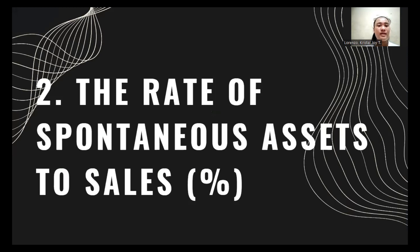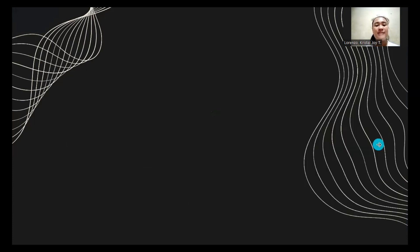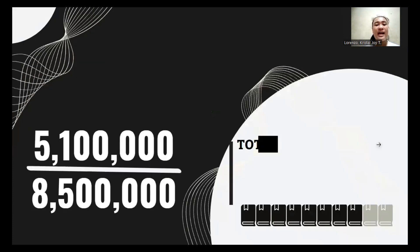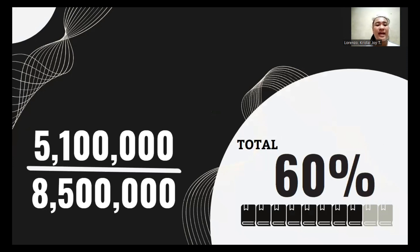Number two, the rate of spontaneous asset to sales. To get the rate of spontaneous asset, current assets should be divided by sales, which is 5,100,000 divided by 8,500,000, equals 60%.